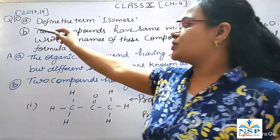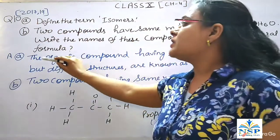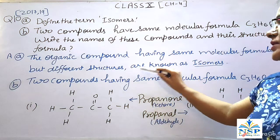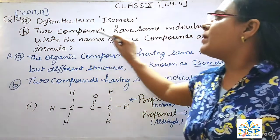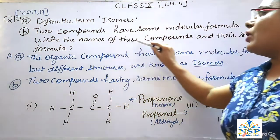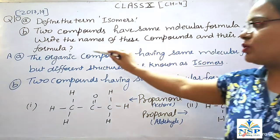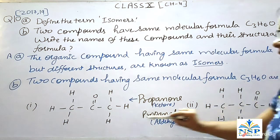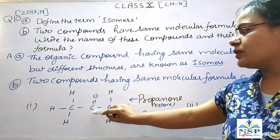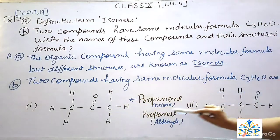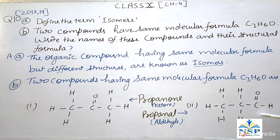Our next question: Define the term isomers. Organic compounds having the same molecular formula but different structures are known as isomers. Two compounds having the same molecular formula C3H6O — write the names and structural formulas. The two compounds with molecular formula C3H6O are propanone, which is a ketone with the ketone group attached to the second carbon atom, and the second one is propanal, where the aldehyde group is attached to the first carbon atom.